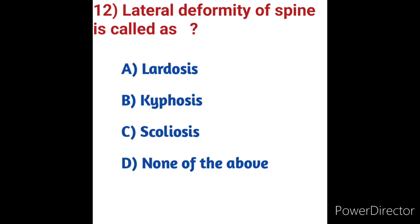Question number twelve: Lateral deformity of the spine is called as? Options: A) Lordosis, B) Kyphosis, C) Scoliosis, D) None of the above. Lordosis is inward curving of the lower back, also called sway back — caused by arthritis, dwarfism, and dystrophy. Lateral deformity is not lordosis. Kyphosis is an abnormal forward rounding of more than 50% curvature of the spine, involving the upper back.